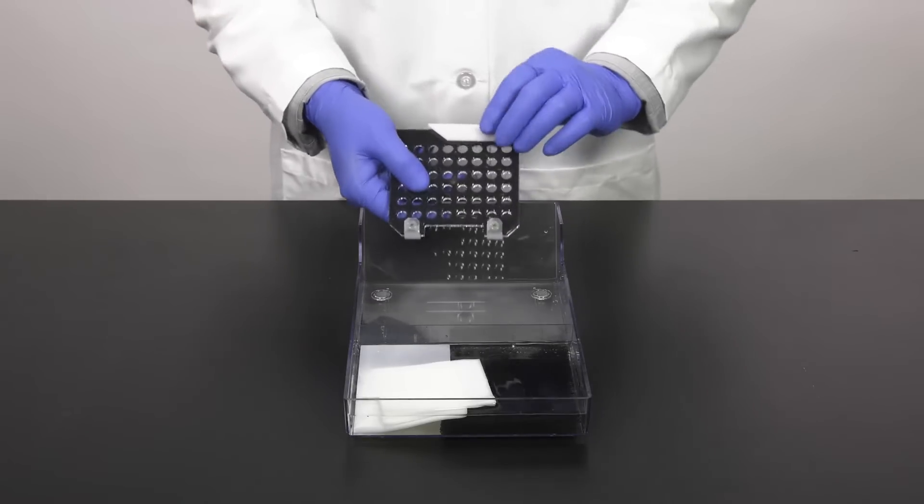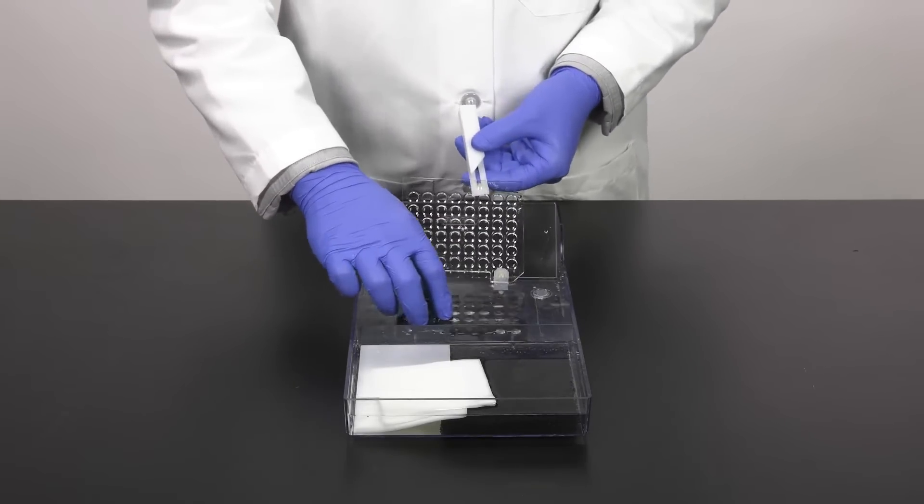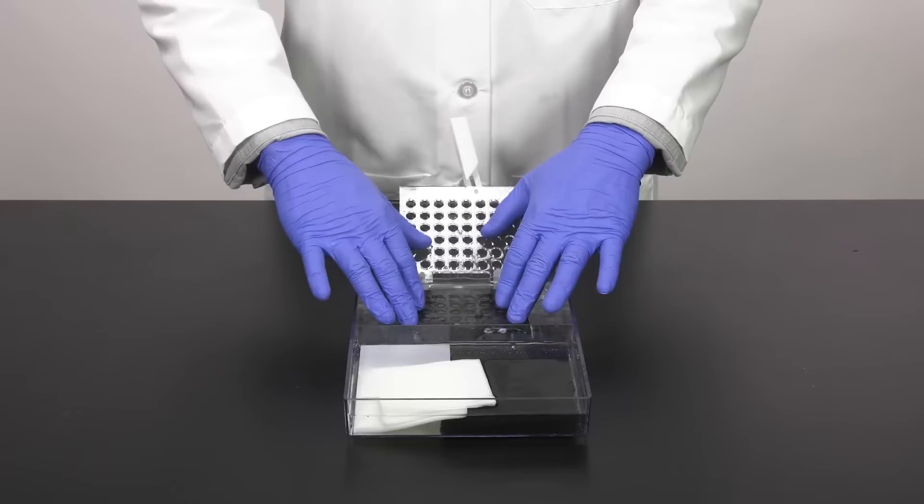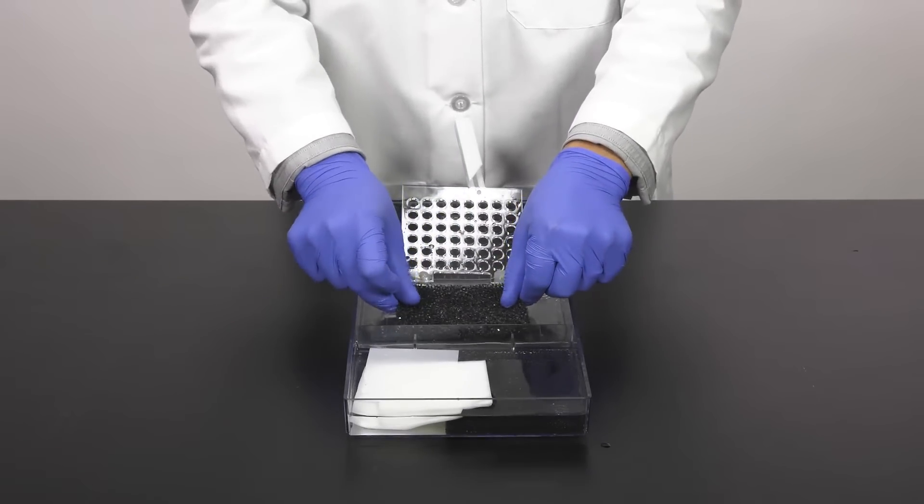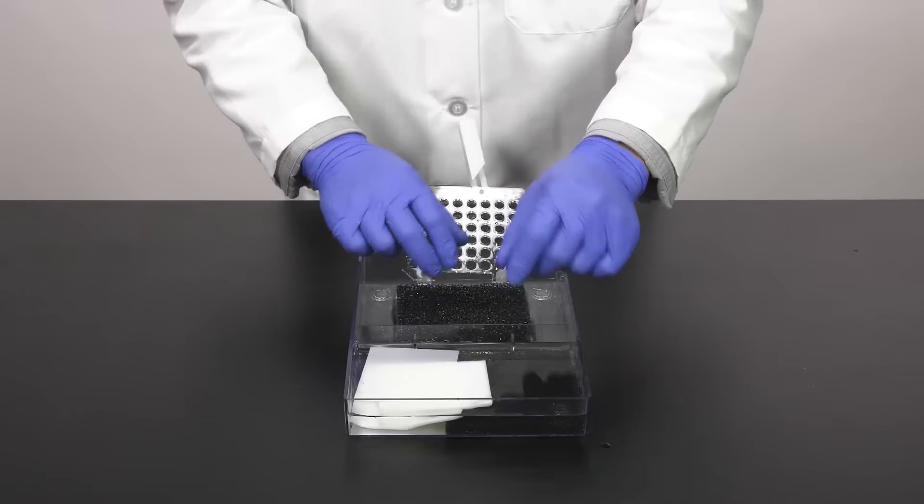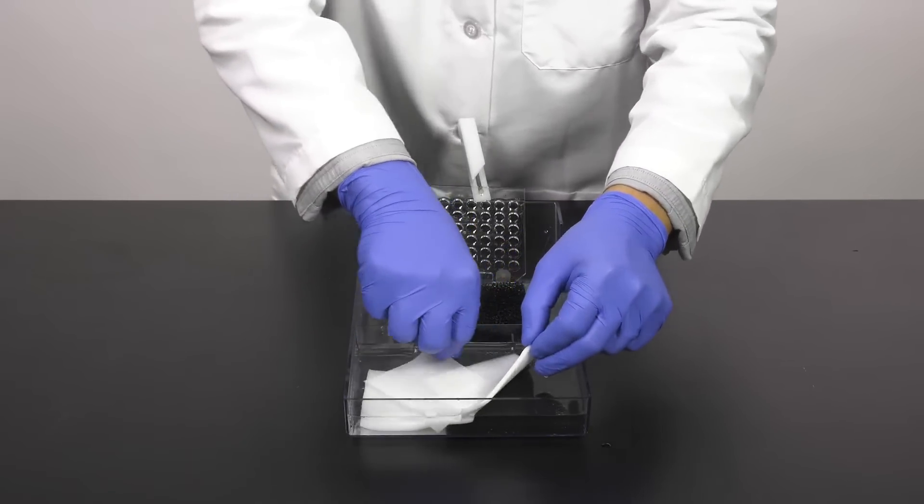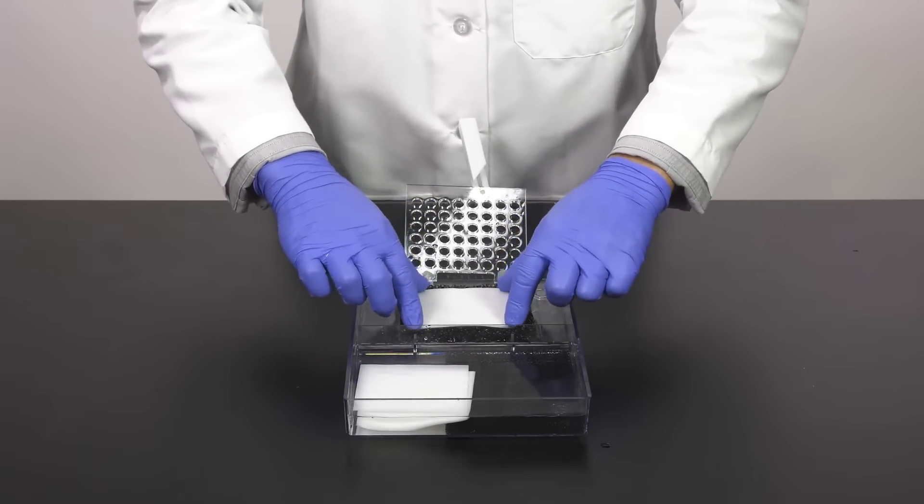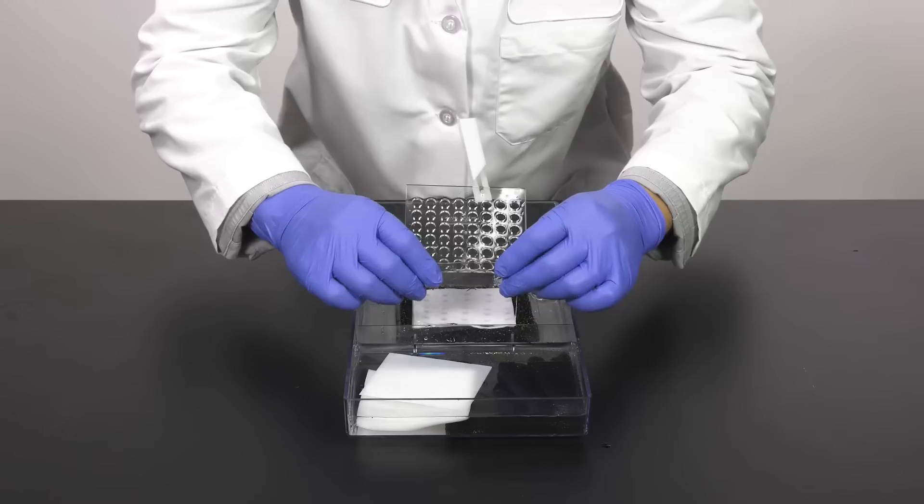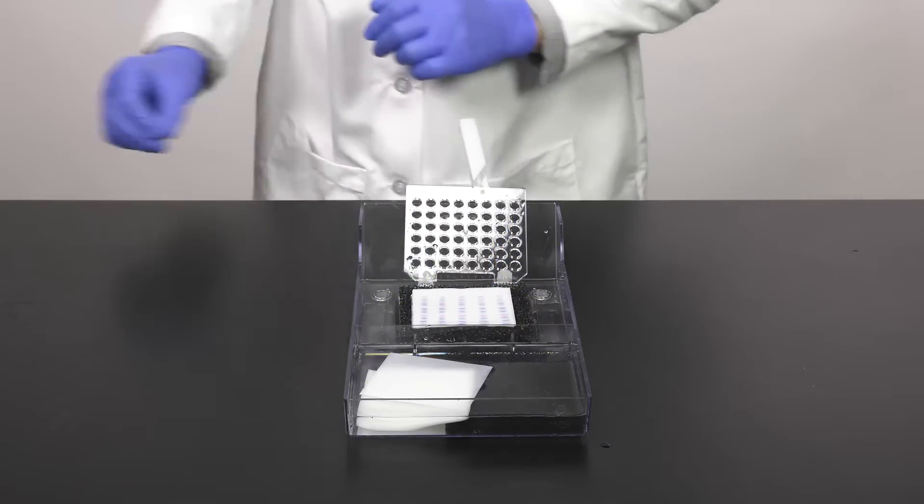To make the blotting sandwich, place the gel holder cassette with the black side down in a tray with sufficient transfer buffer. Place one pre-wet fiber pad onto the black plastic, followed by a pre-wet sheet of blotting paper. Take the gel and carefully place it onto the blotting paper, being careful to avoid trapping excessive air bubbles.